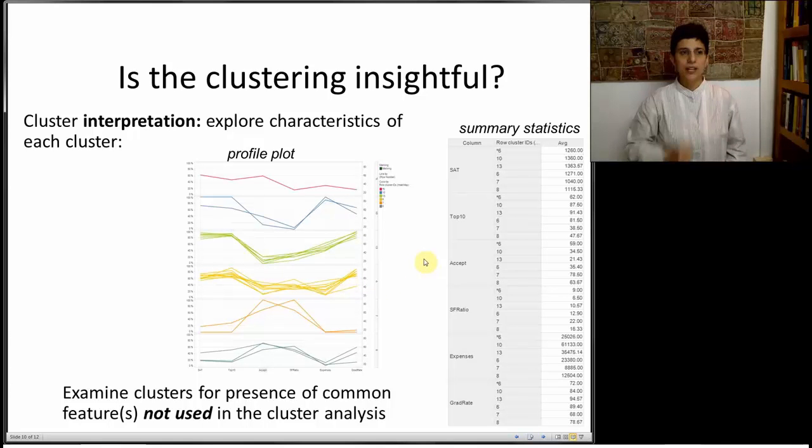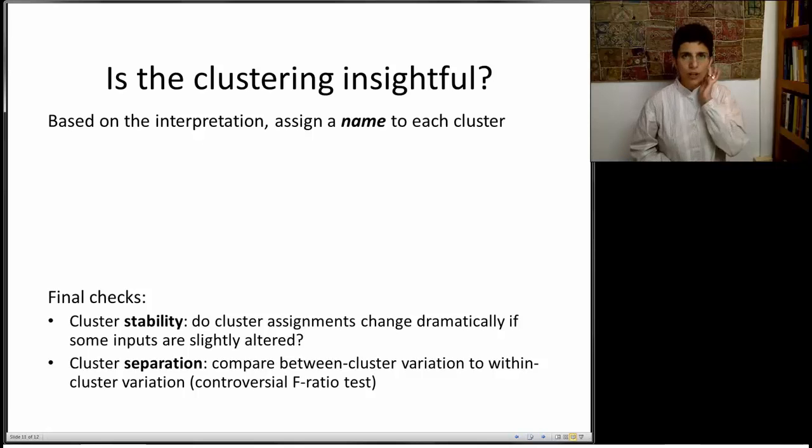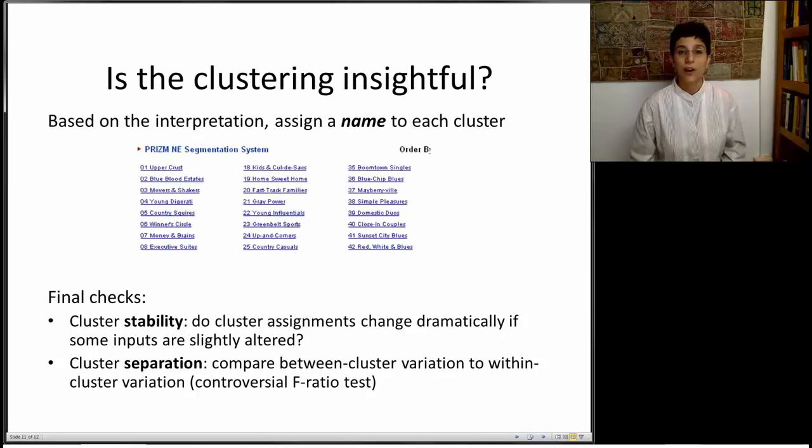Again, the insightful thing comes out of not saying that the expenses are different, or the SAT scores were different, because those were the variables that we actually included in the analysis. The real insights come out when you're able to determine something that you didn't measure that comes out of the different clusters. And one way to help you in finding those special qualities is to try and give a name to each one of these clusters. If you name each one of the clusters, that usually means that there is something insightful that's going on. For example, if you remember the Claritas segmentation that we talked about a while ago, that's exactly what happened there. They were able to give names, which enabled the domain experts to determine whether they're useful or not useful.